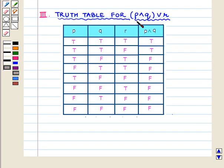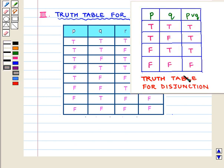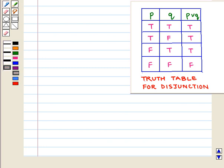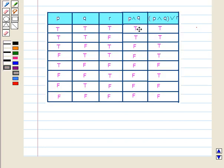Now we will write the truth values of P and Q or R. For this, we will consider two columns: the column for R and the column for P and Q. We know the truth values for disjunction: if P is true and Q is true, P or Q is true; if P is true and Q is false, P or Q is true; if P is false and Q is true, P or Q is true; and if both P and Q are false, then P or Q is also false. So, in the first row, R is true and P and Q is also true, so P and Q or R is true.